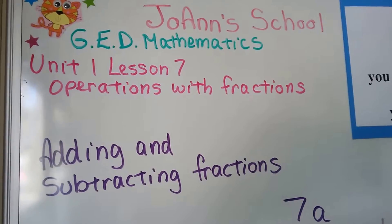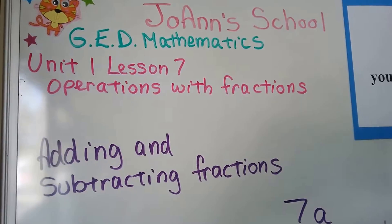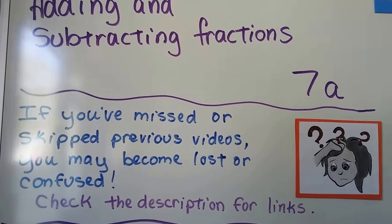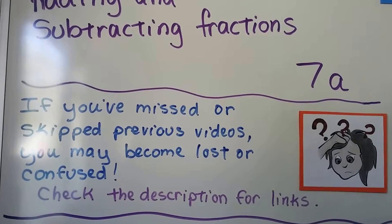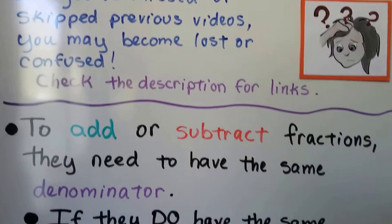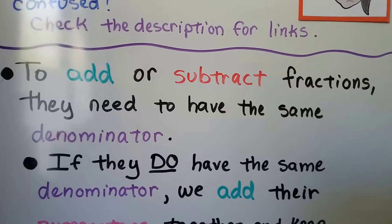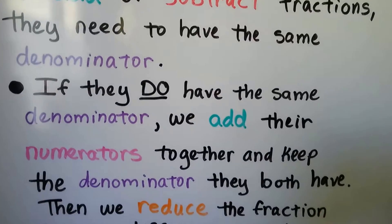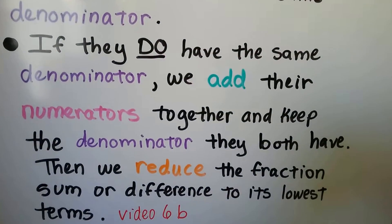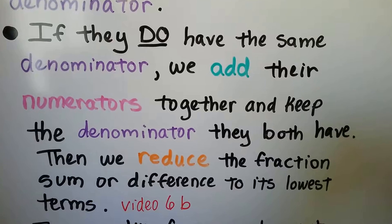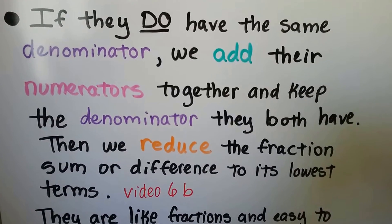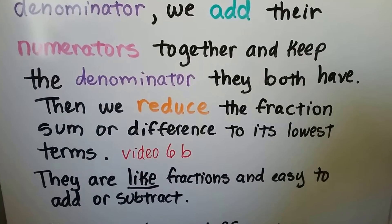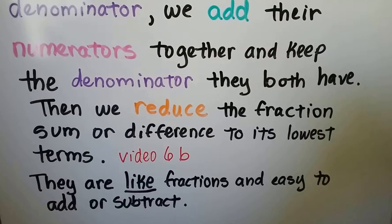We're at unit 1, lesson 7, and we're finally adding and subtracting fractions — this is 7a. If you missed any of the previous videos from lesson 6, you might become lost or confused, so there are links in this video's description. To add or subtract fractions, they need to have the same denominator. If they do, we add their numerators together and keep the denominator, then reduce the fraction to its lowest terms. There's a link to video 6b that shows how to reduce fractions.